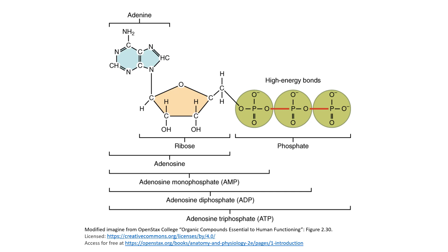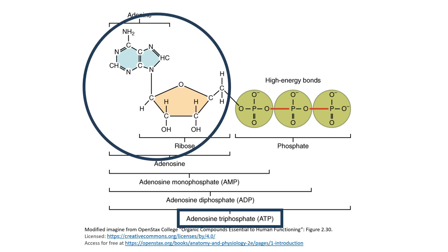In this image, you are looking at adenosine triphosphate, also known as ATP. ATP is an energy-transferring nucleotide that exists in all of our cells. Structurally, it is made up of adenosine, which is a combination of adenine and ribose.